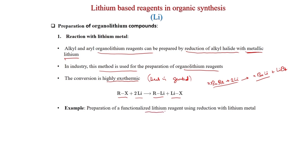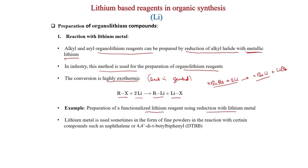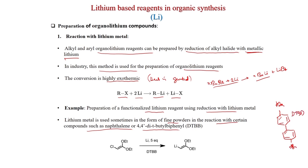For preparation of functionalized lithium reagents, lithium metal is sometimes used in the form of fine powder in reaction with electron carriers such as naphthalene or 4,4'-di-tert-butylbiphenyl (DTBB). When benzyl chloride is treated with lithium and a catalytic amount of DTBB, the benzyl lithium species is formed.